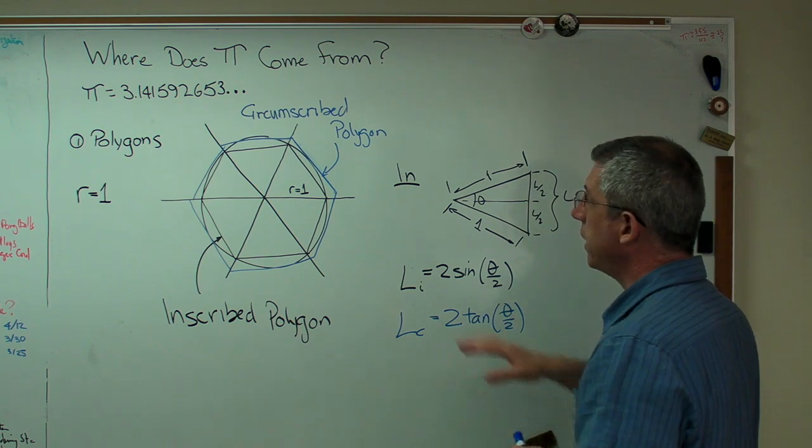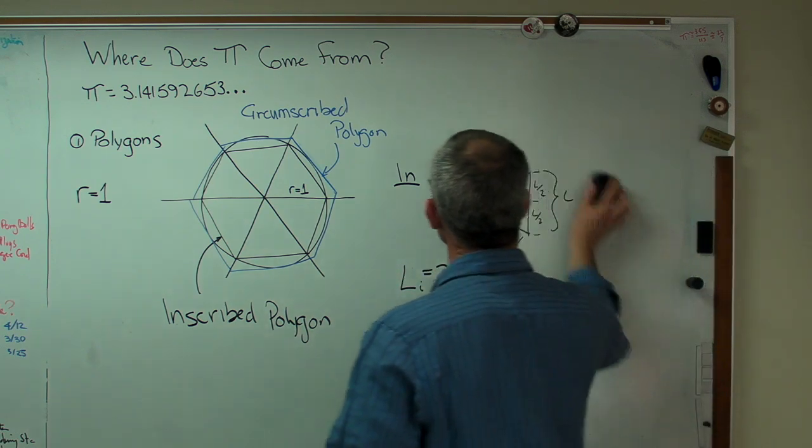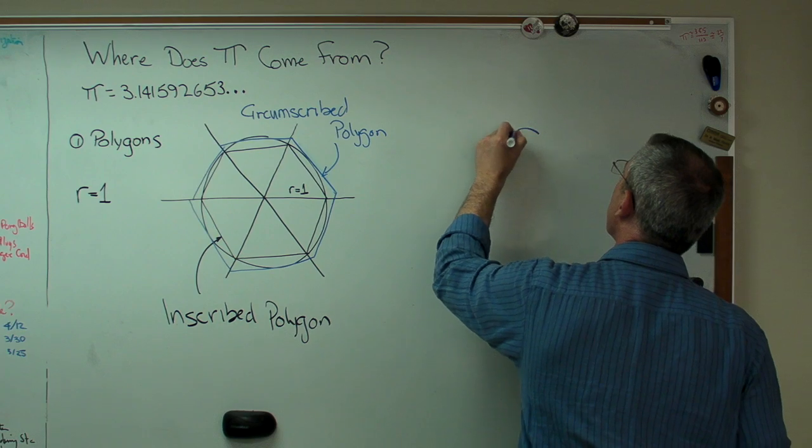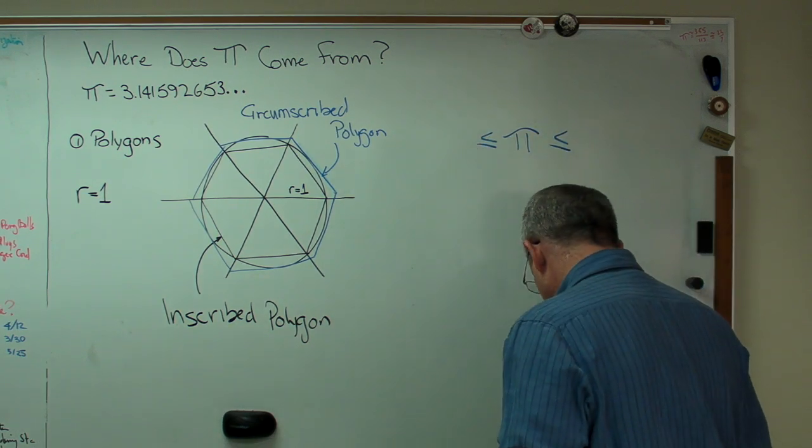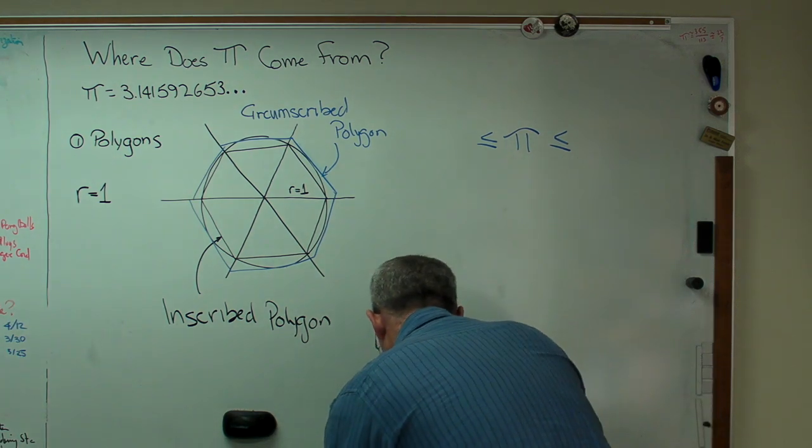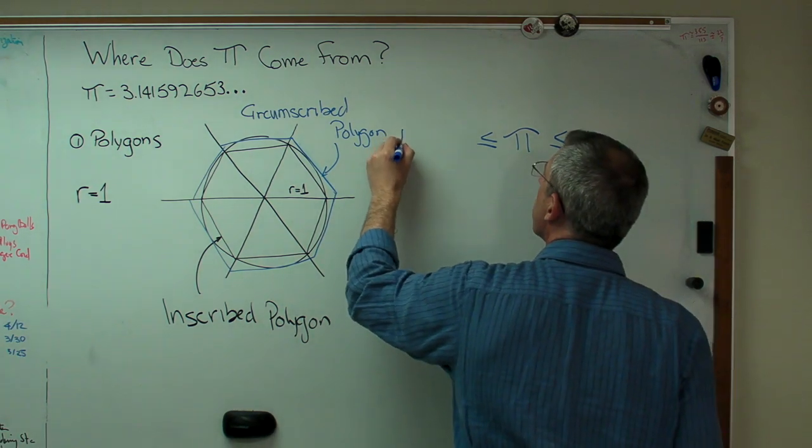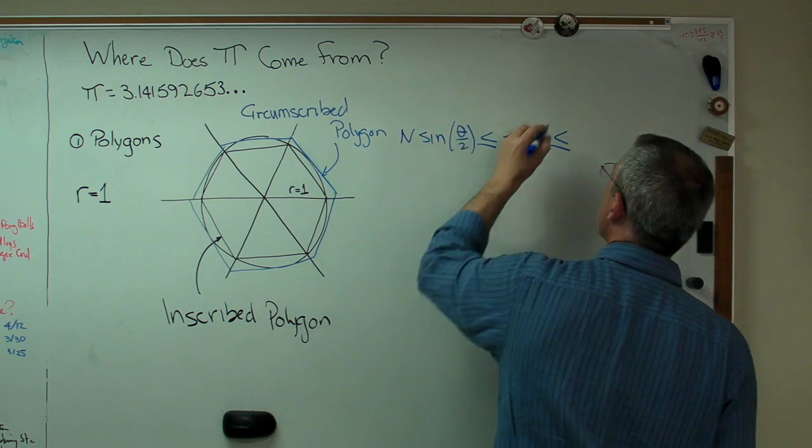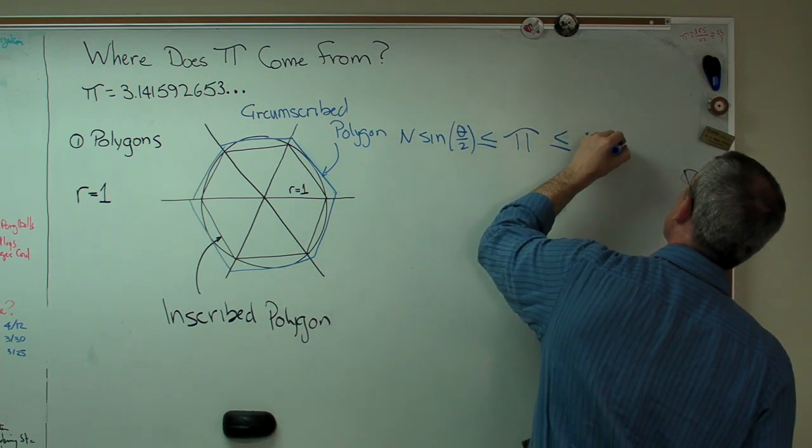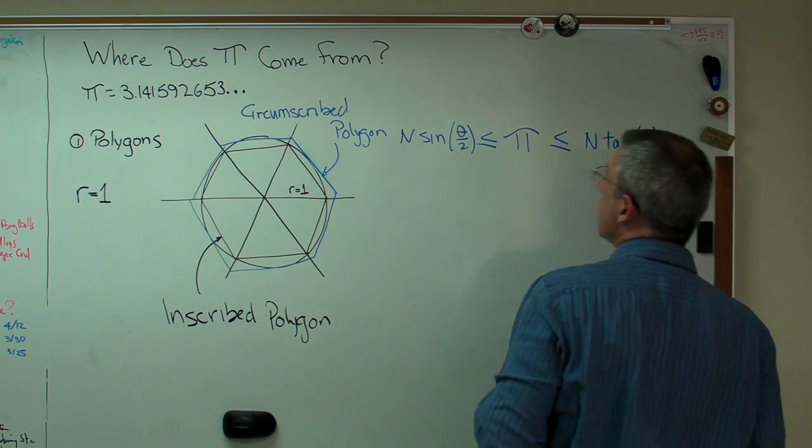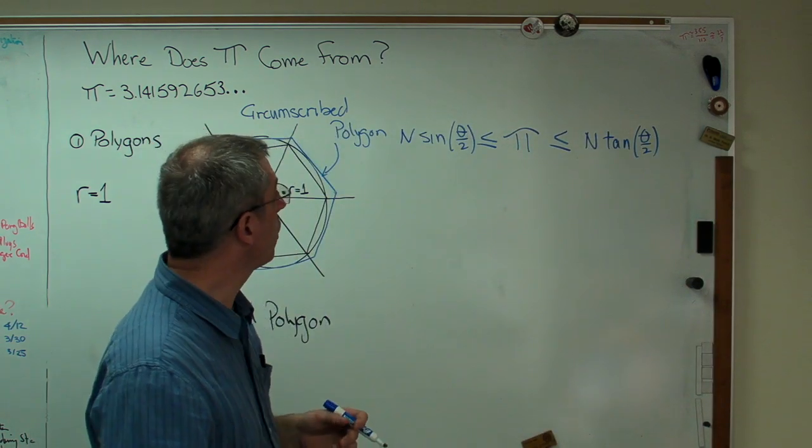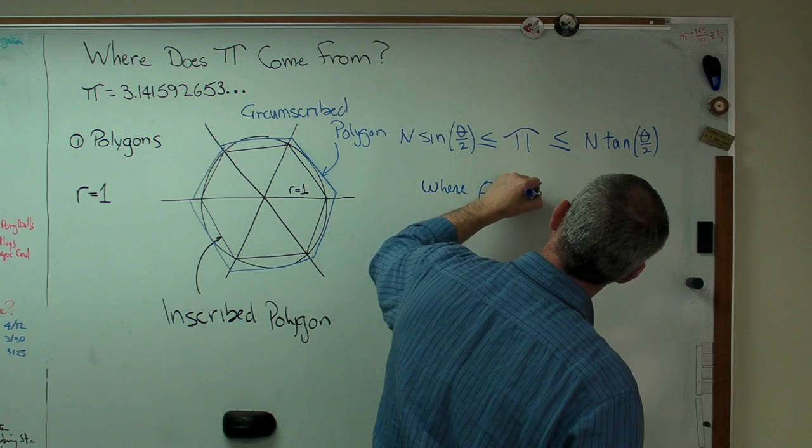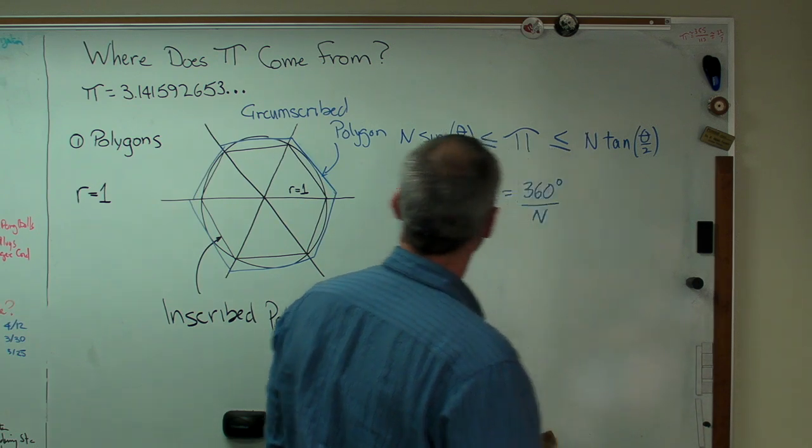So the way you work this out, I'm going to have to erase some stuff here. I'm going to erase this. As you can say, the pi is in between the inner and outer one of those. And I've got to get my notes here. It's n times sine theta over 2 there, and n tangent theta over 2 there. Now, in order to make this work, you have to know what theta is. And that's what theta is.